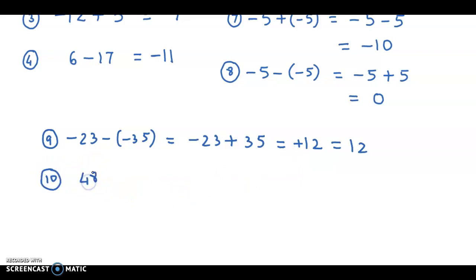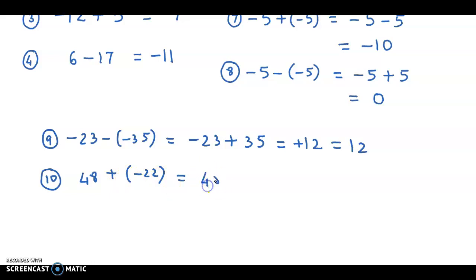Next example: 48 plus minus 22. You have a positive sign next to a negative sign, which makes it negative. So we have 48 minus 22. If you subtract 22 from 48, the difference is 26.